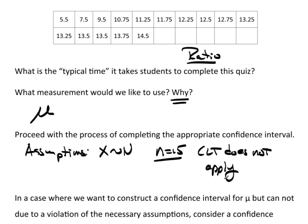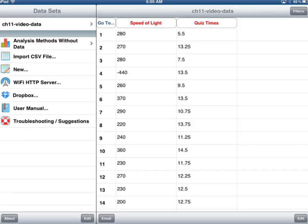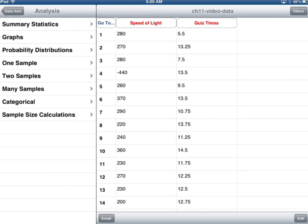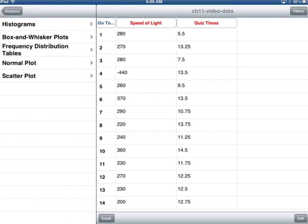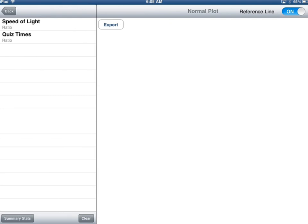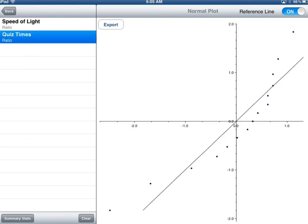What I'm going to do is, let's take a look at a normal plot. If I jump to TC Stats, select my data, and I will do a graph, specifically normal plot, and select the quiz times. And there's my normal plot.